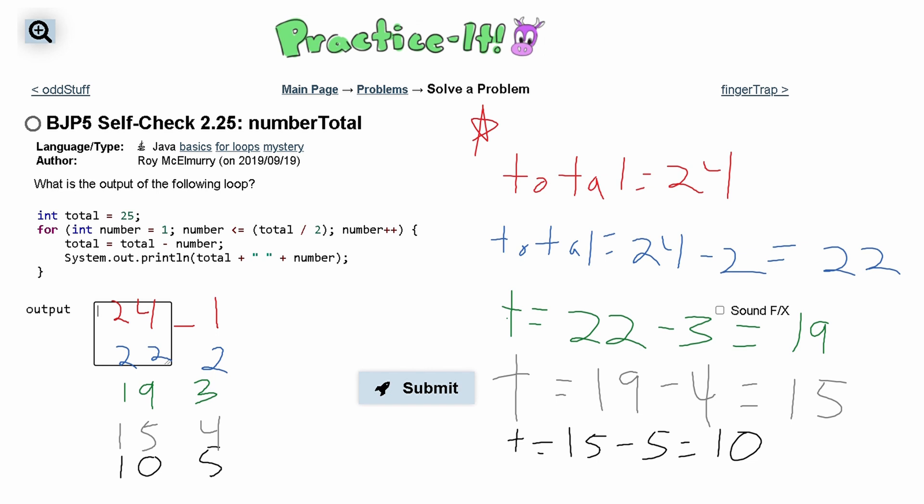So now we can check if we are still in our loop or not. Our total is now 10. And if we divide this by 2 we're going to get 5. Now our number is equal to 6. Since number is greater than our total divided by 2,